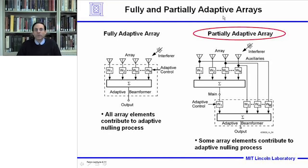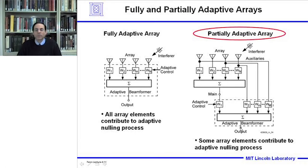This diagram shows two types of adaptive arrays: the fully and partially adaptive arrays. A fully adaptive array has a weight control at every antenna element so that all array elements contribute to the adaptive nulling process. In a partially adaptive array, which will be explored in this lecture, we have a phased array antenna with amplitude and phase weights forming a main channel, then tapping off from several elements to form auxiliary channels. The adaptive beam former weights the auxiliary channels to null the interference at the output.